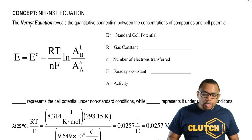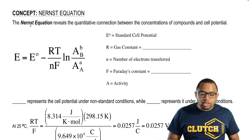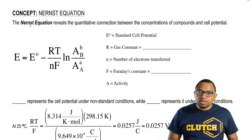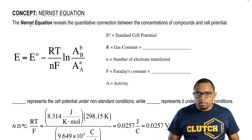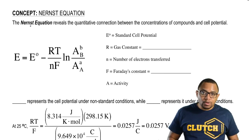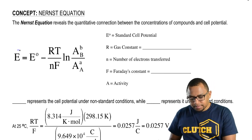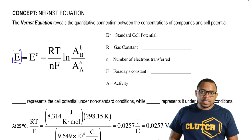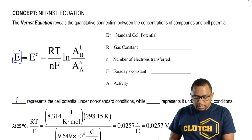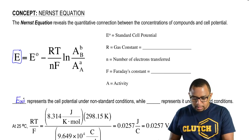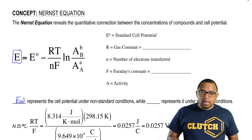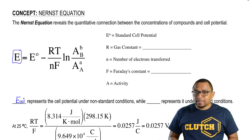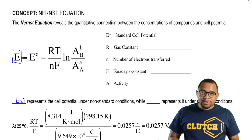The Nernst equation reveals the quantitative connection between the concentrations of compounds and cell potential. The Nernst equation is utilized when our concentrations of our compounds differ from one molar. The Nernst equation equals our cell potential under non-standard conditions, meaning that our concentration isn't equal to one molar, our temperature wouldn't be 25 degrees Celsius, our pH would not equal seven, and our pressure wouldn't be one atmosphere. All of those values represent standard conditions.